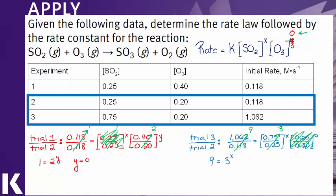So this simplifies to nine equals three to the x. Thus x must equal two. We can plug in two for x in our rate law equation. And now the last thing we have to do is solve for our rate constant k.